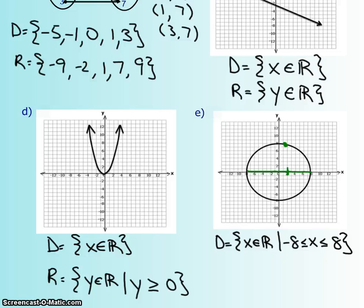Now for a range, any numbers between here and here, which is negative 8 to 8 again. Because anything outside of that, the circle doesn't go that far. So your range, y belongs to all real numbers such that it's going to be between negative 8 and 8.